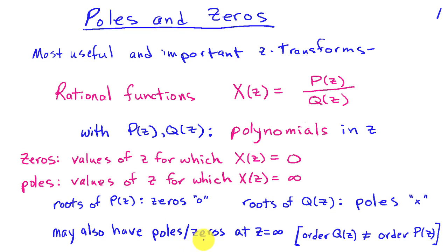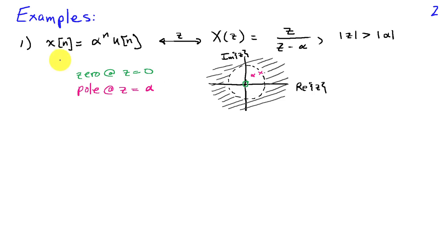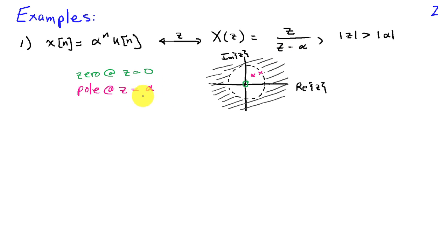You can also have poles or zeros at Z equals infinity when the order of Q of Z is not equal to the order of P of Z — that's something we'll look at at the end of this lecture. For our first example, if X of n is alpha to the n times u of n, then the Z-transform X of Z is Z divided by Z minus alpha, where the magnitude of Z must be greater than the magnitude of alpha for convergence. The roots of the numerator occur at Z equals zero, and the roots of the denominator occur at Z equals alpha. So we have a zero at Z equals zero and a pole at Z equals alpha. We can sketch that in the Z-plane with a circle for the zero and an X for the pole at location alpha.